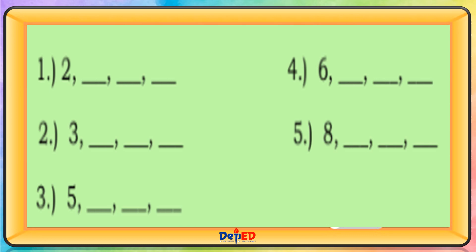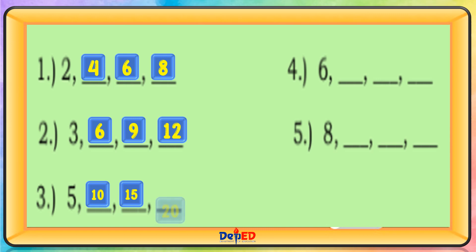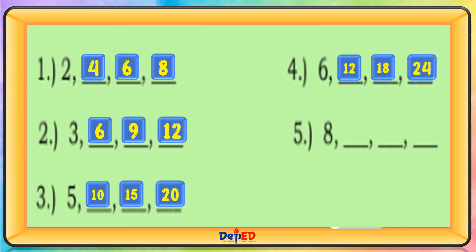The first three multiples are shown: 2 — 4, 6, 8; 3 — 6, 9, 12; 5 — 10, 15, 20; 6 — 12, 18, 24; 8 — 16, 24, 32.